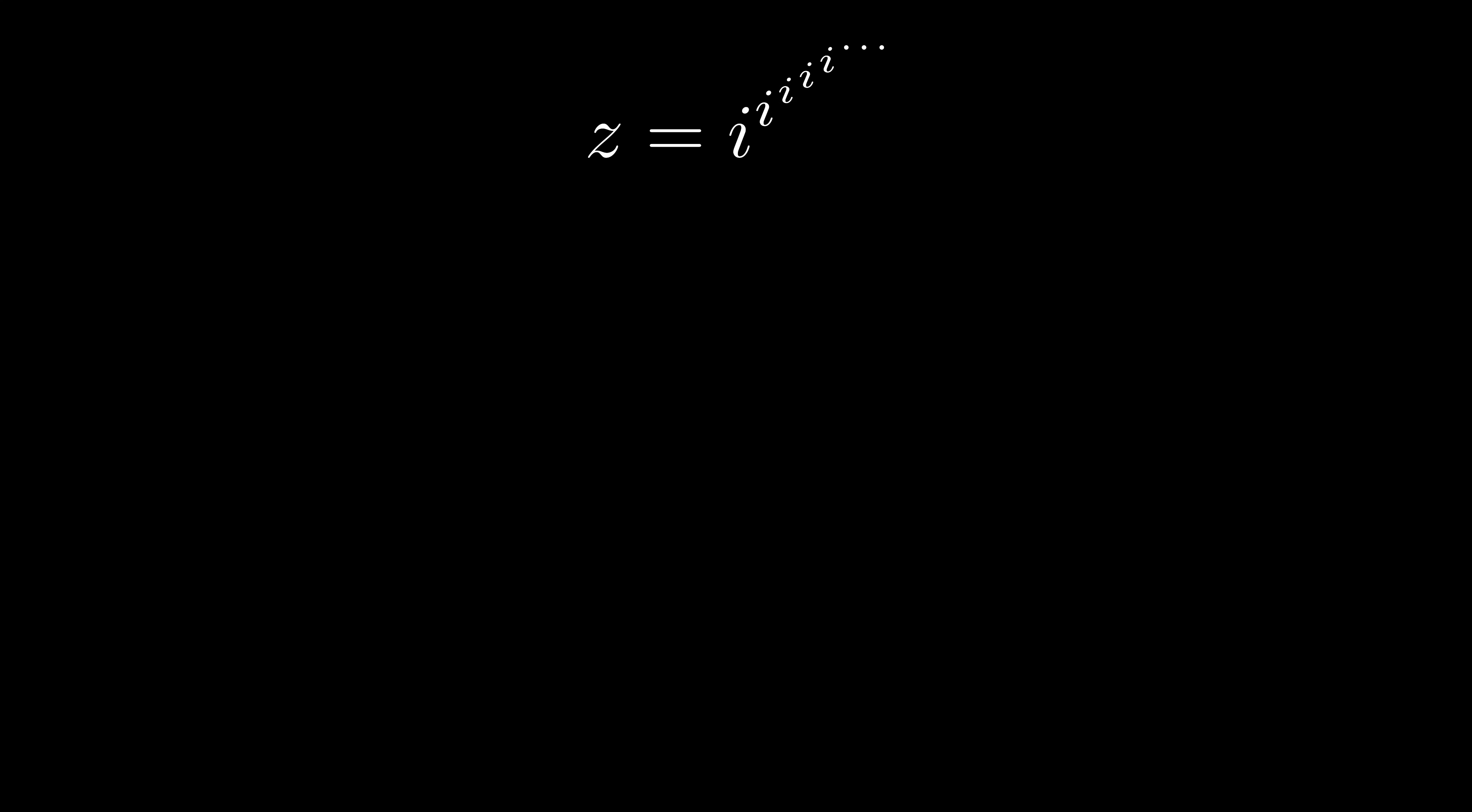The same trick can be applied to the infinite tetration of i. So z is i to the power of z. We can rewrite i using Euler's formula. So our expression becomes z equals e to the power of pi over 2 i z.